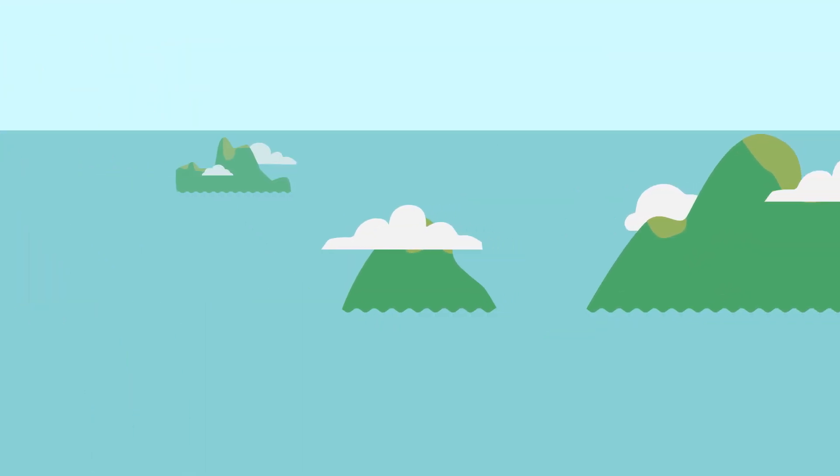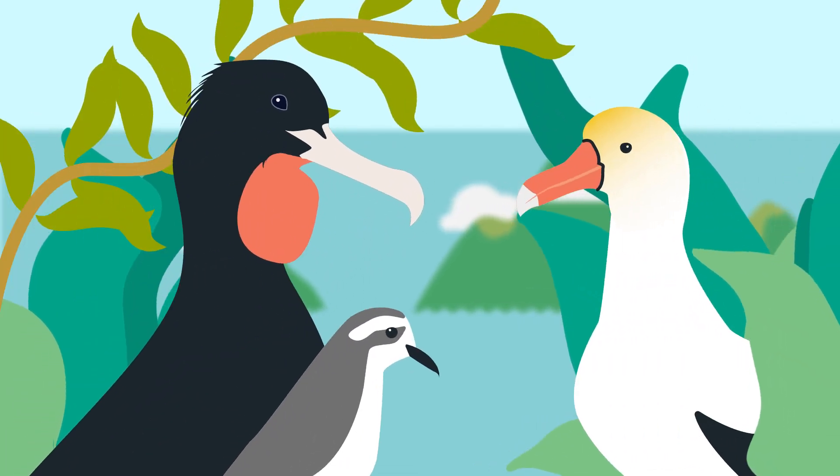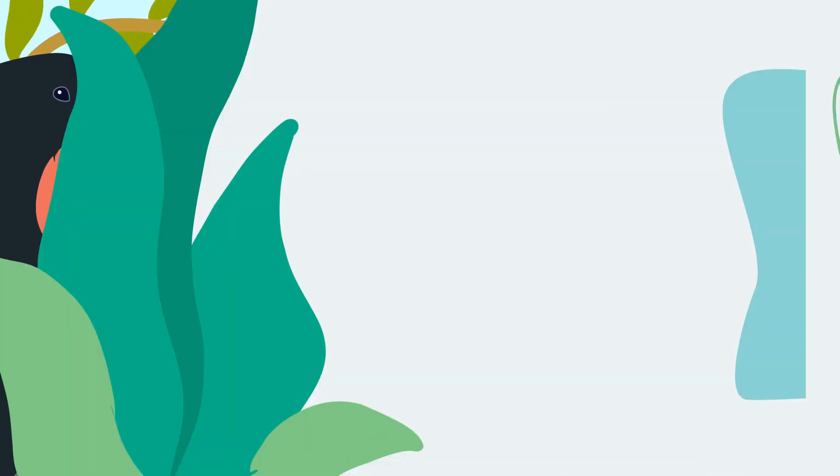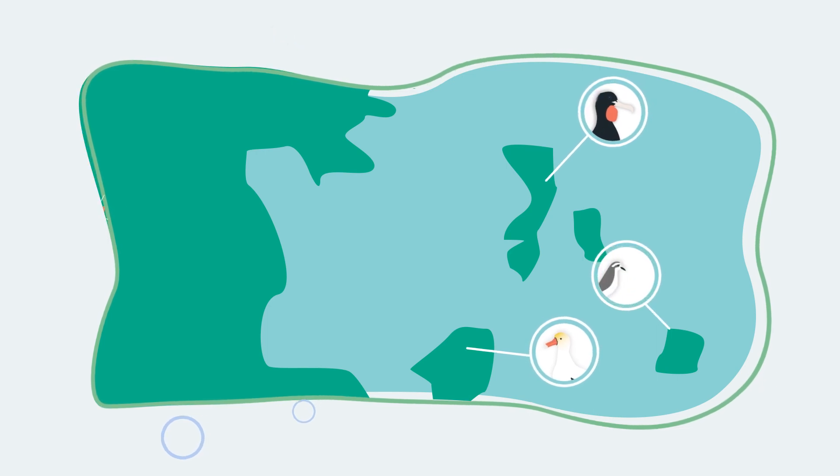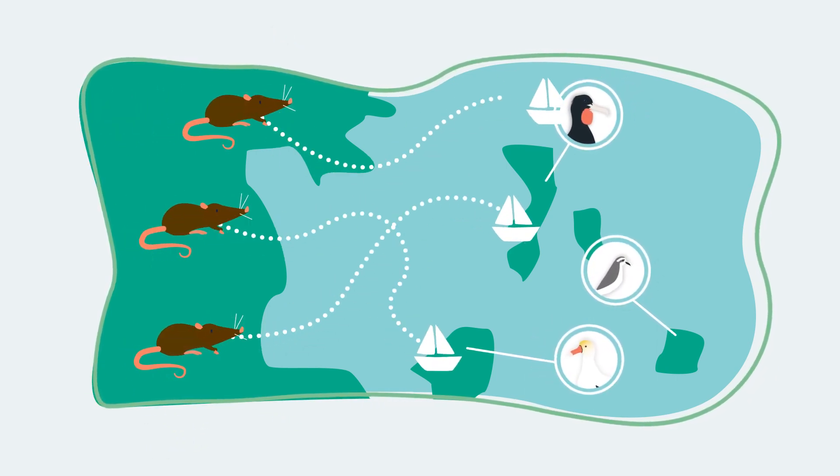The impacts are particularly severe on islands which often hold seabird species found nowhere else. These have evolved in the absence of mammalian ground predators, and therefore have limited natural defenses.